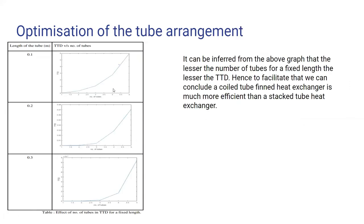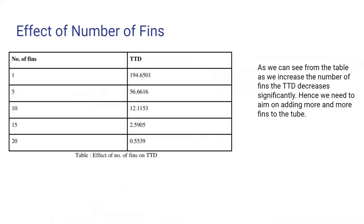Optimization of the tube arrangement, we increase the length of the tube and also the number of the tubes. If we take a length of the tube to be 0.1 and we take the number of tubes to be 1, we see the TTD is the lowest. And as we increase the number of tubes, the TTD increases. And as we increase the length of the tube also, we can see that the TTD is basically decreasing. The more the length, the better the arrangement. Hence, we have to use a coiled fin tube heat exchanger rather than a stacked fin tube heat exchanger.